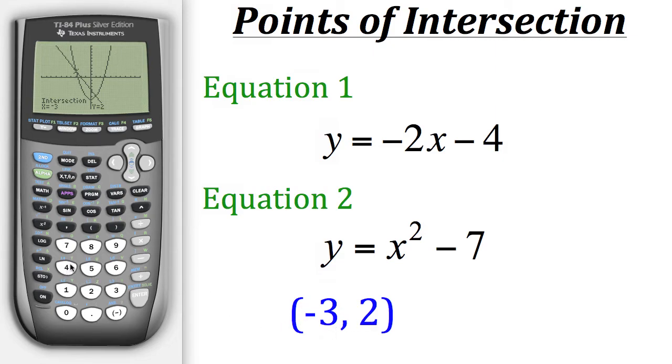Now let's do the same thing to find the other point of intersection. So what we need to do is go back to second trace to pull up those options. And then go to option 5 again for intersect. Now this time we want to get this point. So in order to do that we need to scroll over to that point. And now that we can see that we have y1 selected, we can hit enter. And we also have y2 selected now as well. So hit enter again. And now instead of guessing, we can just hit enter for a third time.